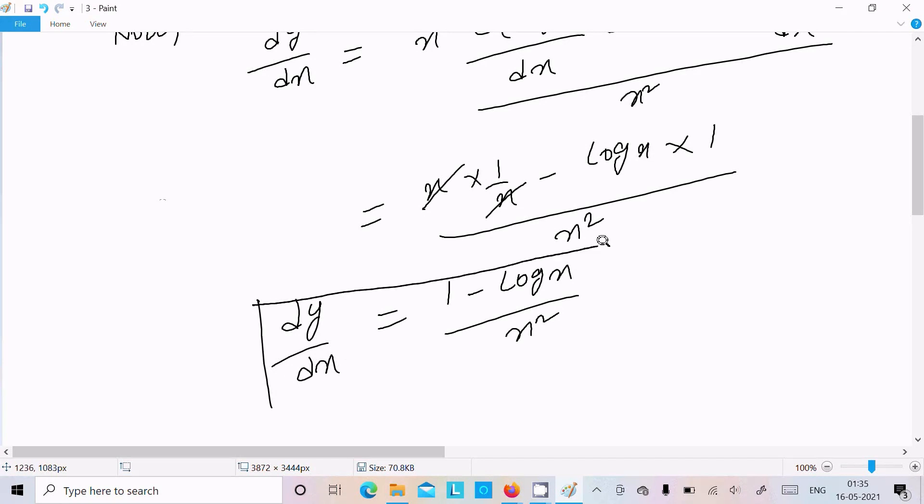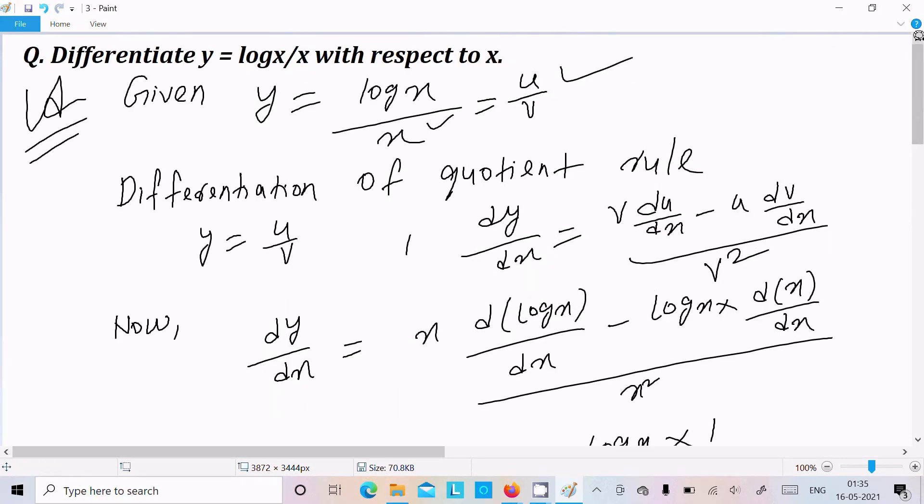So here you get dy by dx equal to 1 minus log x divided by x squared. So this is our answer.